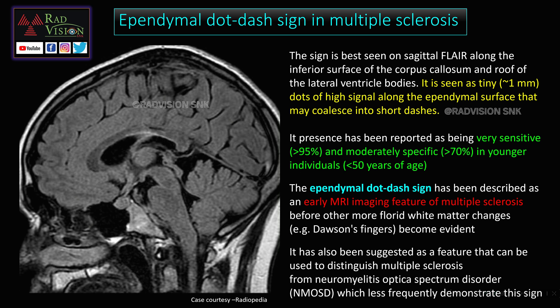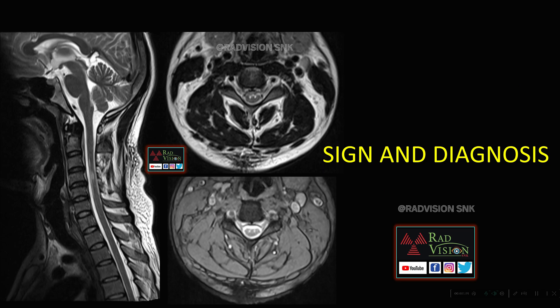The ependymal dot-dash sign has been described as an early MRI imaging feature of multiple sclerosis, appearing before other Dawson's fingers become evident. It has also been suggested that this sign helps distinguish multiple sclerosis from neuromyelitis optica spectrum disorder. Whenever you see this sign, consider it an early marker for suspecting multiple sclerosis, especially in younger individuals less than 50 years of age.